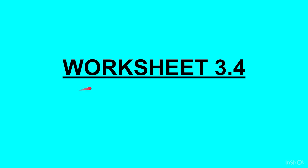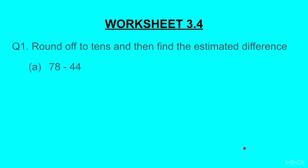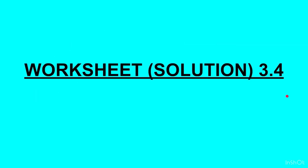Worksheet 3.4: Question 1 — round off to tens and then find the estimated difference. Part A: 78 minus 44. Part B: 627 minus 391. Question 2 — round off to hundreds and then find the estimated difference. Part A: 716 minus 304. Part B: 389 minus 323. Students, do pause the video, go back, solve the questions on your own, and see the solutions only after you have attempted the questions.